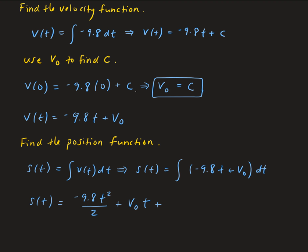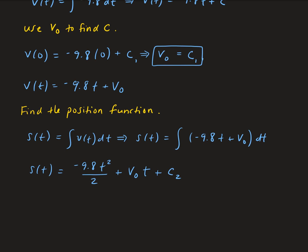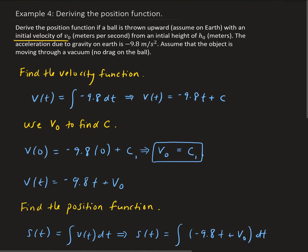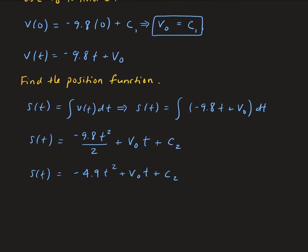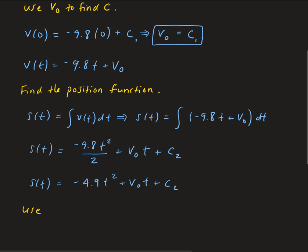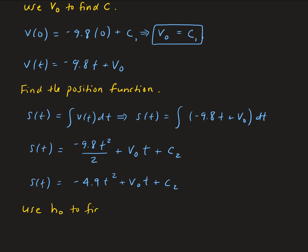Calling the first constant c1 and the second c2 so as not to confuse them, this simplifies to s of t equals negative 4.9t squared plus v naught times t plus c2. We need to use our initial value to find c2, which will come from the initial height.